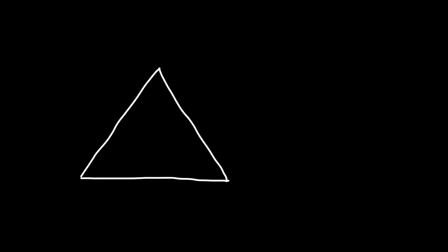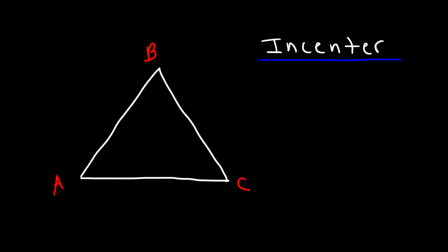So let's start with a picture. Let's call this A, B, and C. The in-center is always inside of the triangle, and you can find it by the intersection of the three angle bisectors.